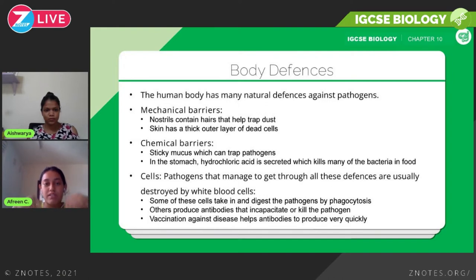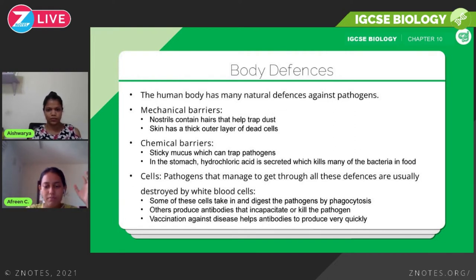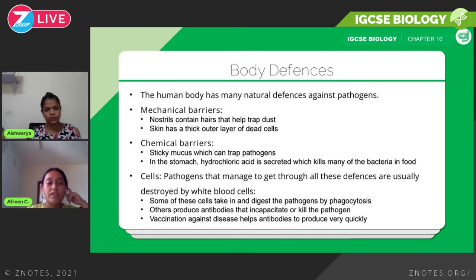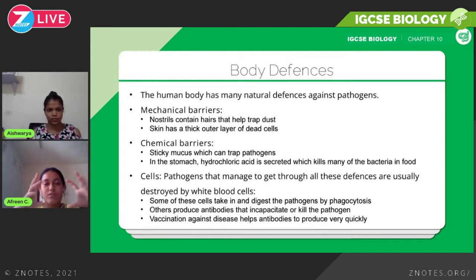The next mechanical barrier is your skin, which has a thick outer layer of dead cells that prevents pathogens from entering via the body's vast surface area. This is why it's so important to treat wounds and cuts immediately and cover them with band-aids or plasters — to close any additional openings for pathogens.